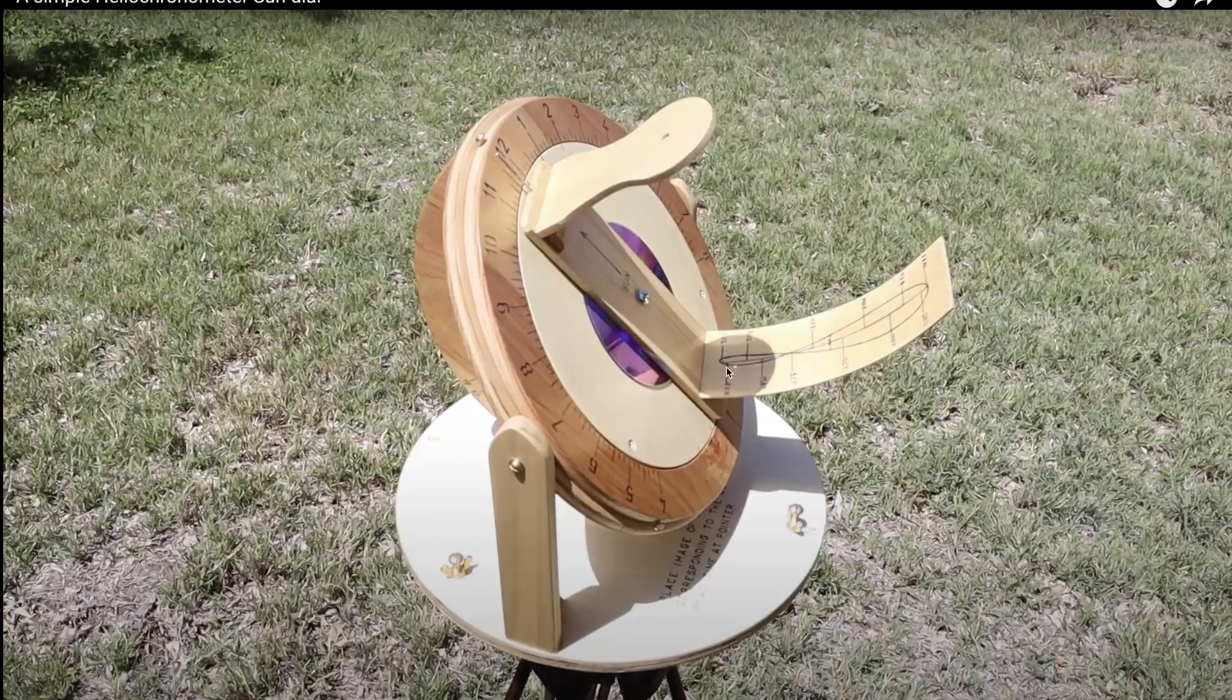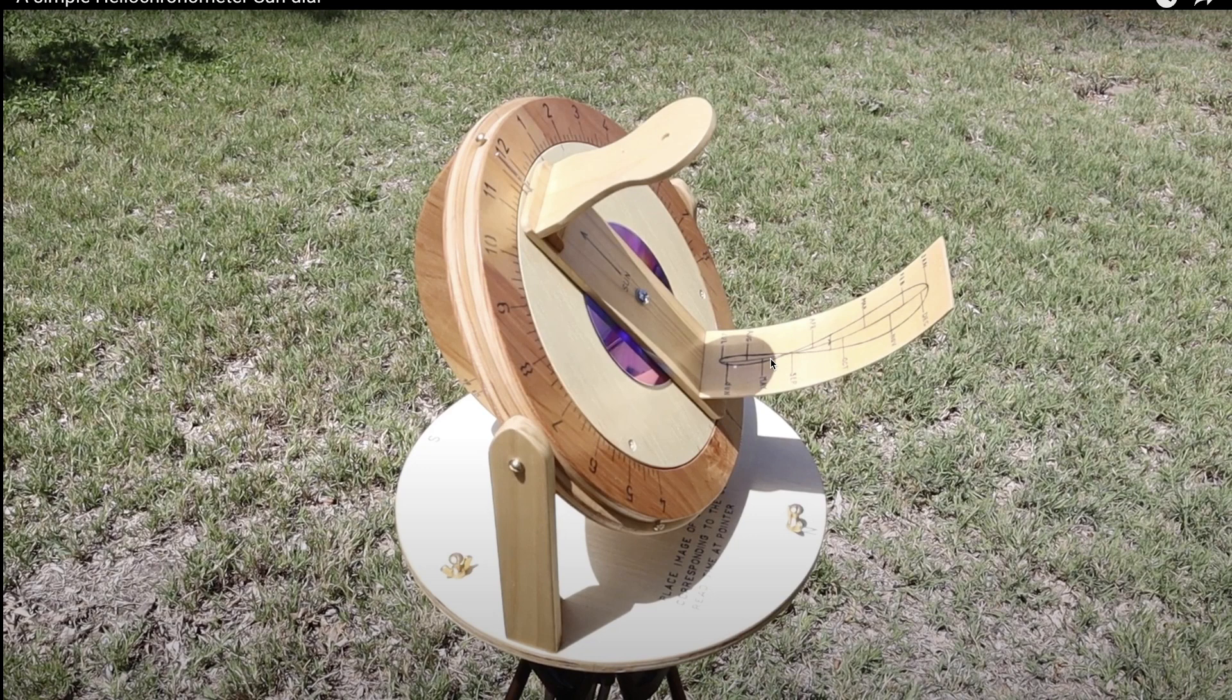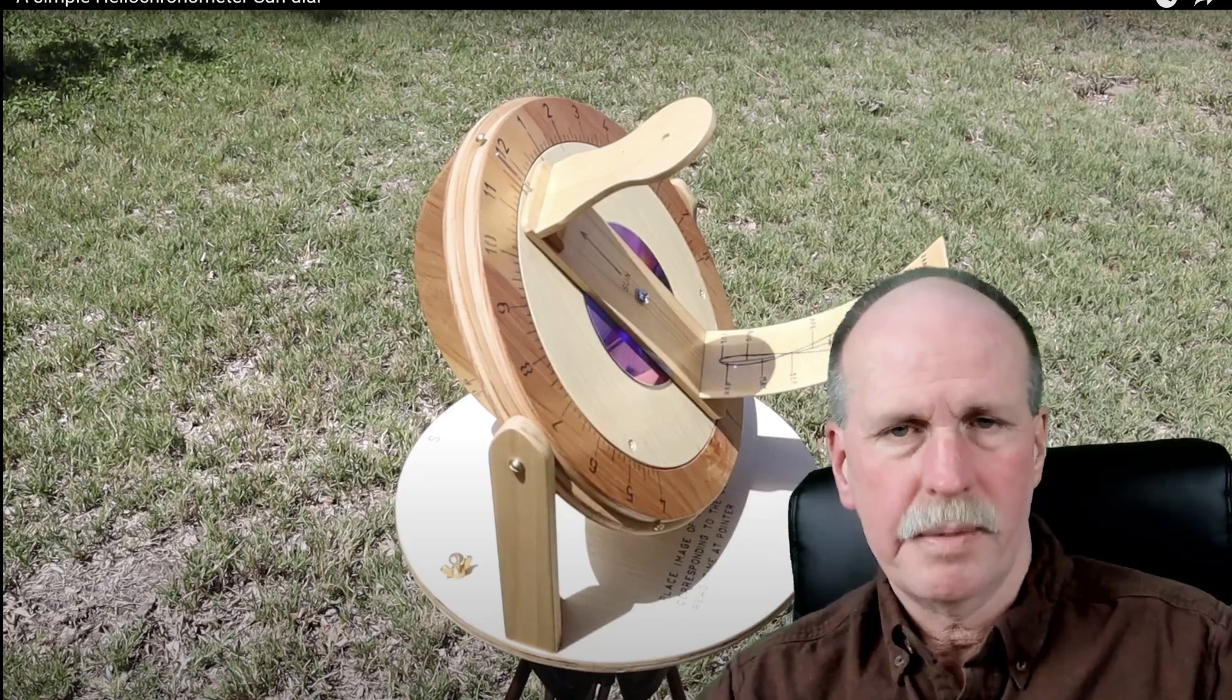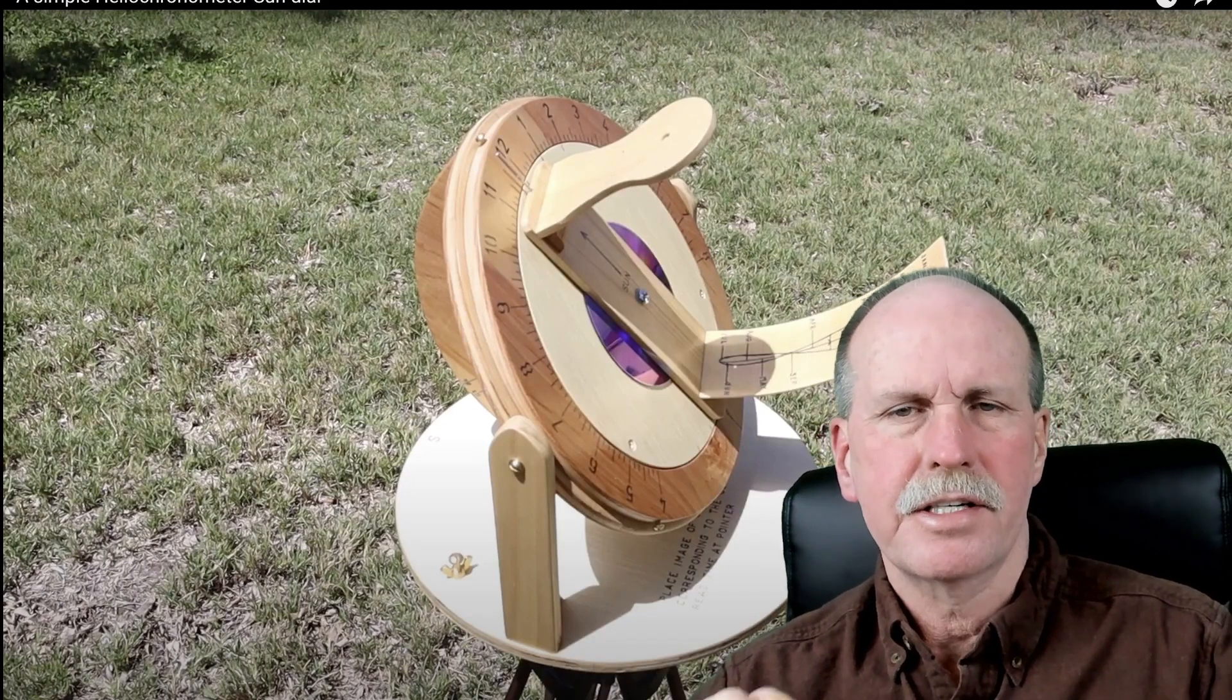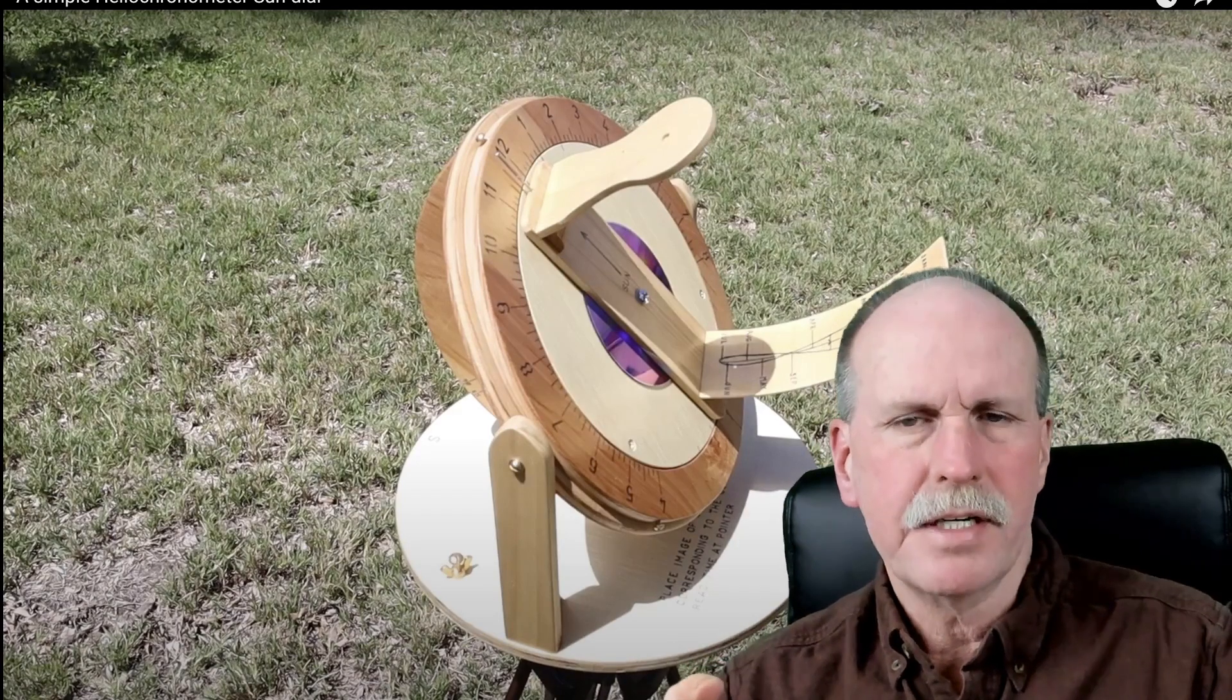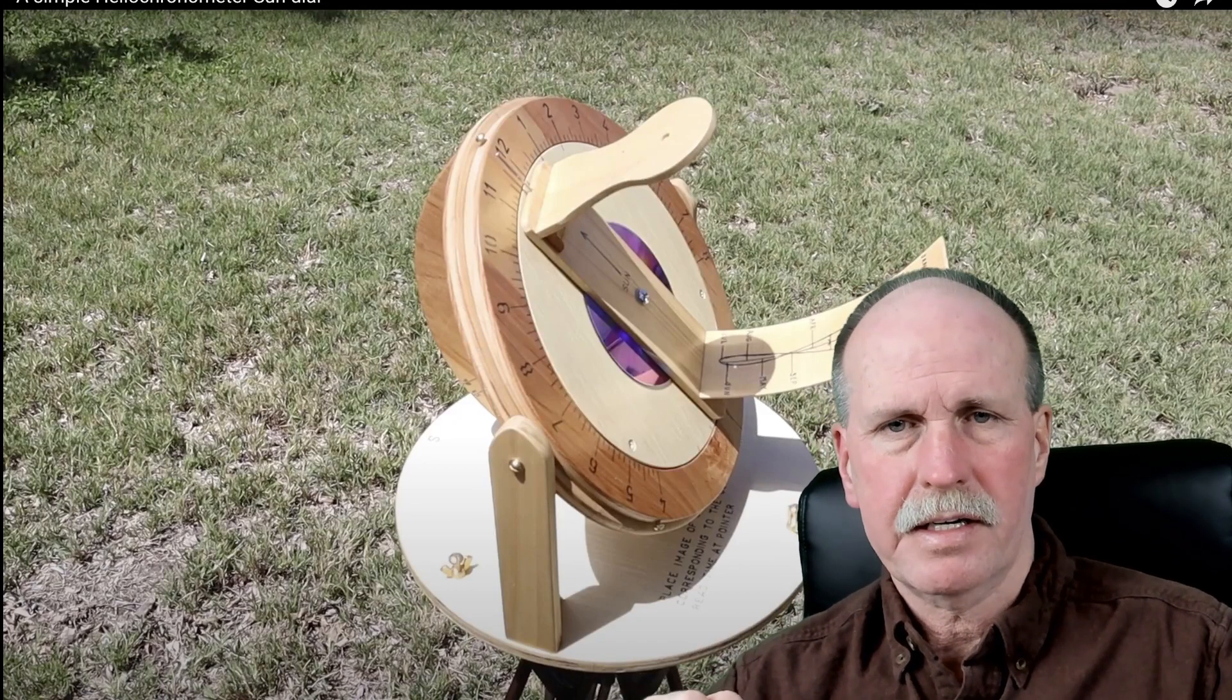So let's go back to that heliochronometer and have a look at something, maybe a little detail that we may have missed. And here it is right here. This is the solar analemma. Now, this is related to what's called the equation of time. Now, the Earth orbits the sun in an elliptical orbit. It's closest to the sun on January 4th, and it's furthest away on July 4th. Now, it's not that much of a difference, only about 3%, but it is enough to have an effect on our timekeeping.